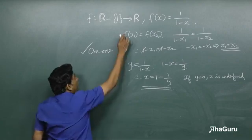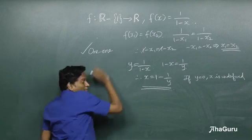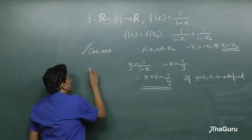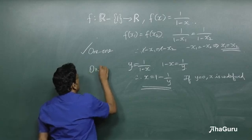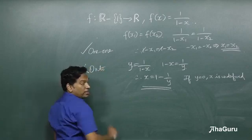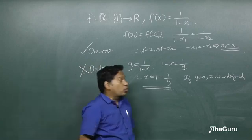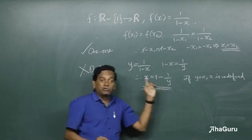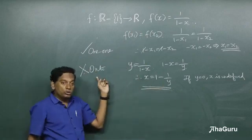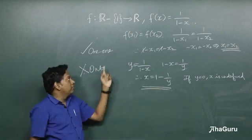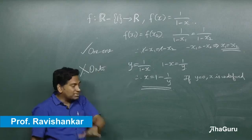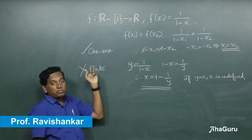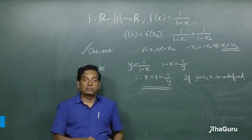So for this co-domain where all real numbers are given, it is not an onto function. If the co-domain were given as ℝ minus {0}, then it would be onto. But as stated in the problem, the function is 1-1 but not onto — and that's the answer.